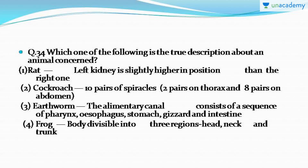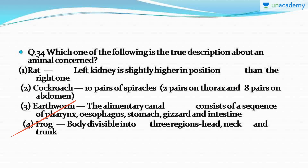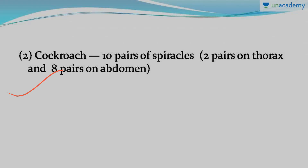Question number 34 asks for the true description of an animal given in the options — the correctly described animal is cockroach. I'd like to mention: it was previously thought that earthworm and frog were not included in the NEET syllabus, but that is a wrong perception. This year a few questions from frogs were asked, so please don't neglect earthworm and frog — read them too. Be ready for everything.